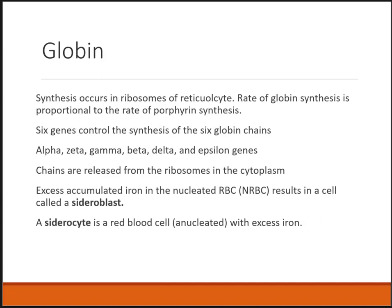The globin chains are constantly being made in the ribosomes, and the amount being made is usually equal to the amount of porphyrin synthesis. There are basically six genes that control the globins: alpha, zeta, gamma, beta, delta, and epsilon. Sometimes if we're not making the chains fast enough, excess iron builds up in the red blood cells. This extra iron seen in the nucleus of nucleated red blood cells will make what's called a sideroblast.